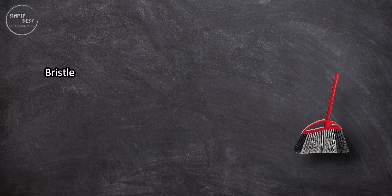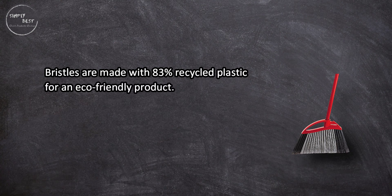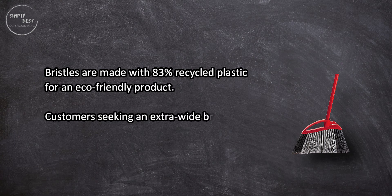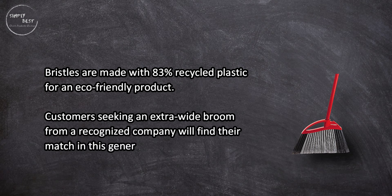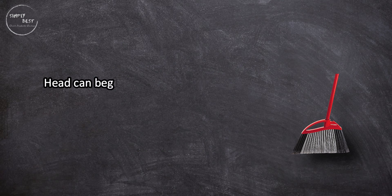Bristles are made with 83% recycled plastic for an eco-friendly product. Customers seeking an extra-wide broom from a recognized company will find their match in this generously sized product. Head can begin to wobble after heavy use. Bristles could be softer.